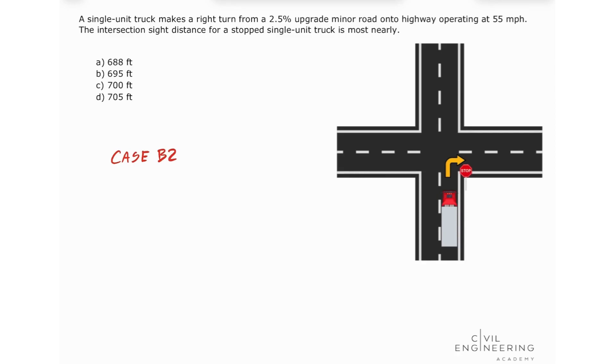And we're going to look on our AASHTO Green Book on page 9-45. And we're going to see equation 9-1 that says that our intersection side distance is equal 1.47 times the speed of the vehicle in the major road times T sub G. T sub G is the time gap for a minor vehicle to enter the major road.